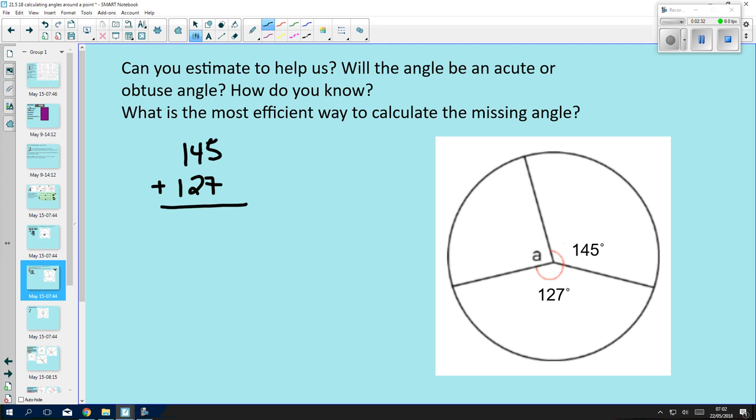Their total is going to be over 270 degrees. Therefore, there's a good chance that this angle, the missing angle A, will be an acute angle. So let's work it out.